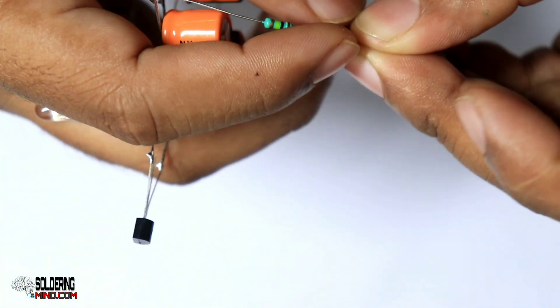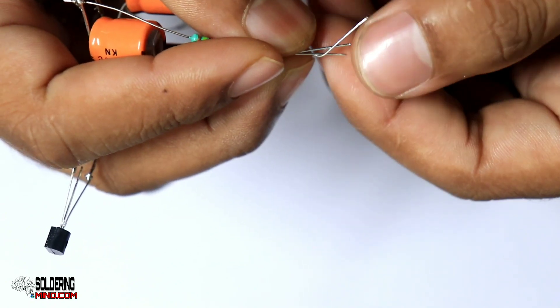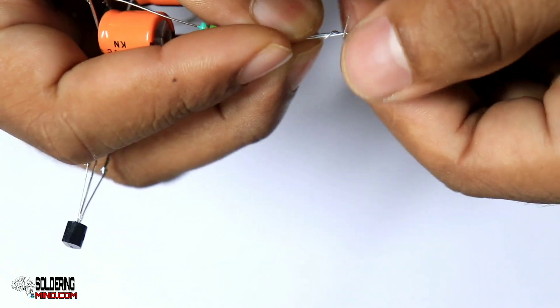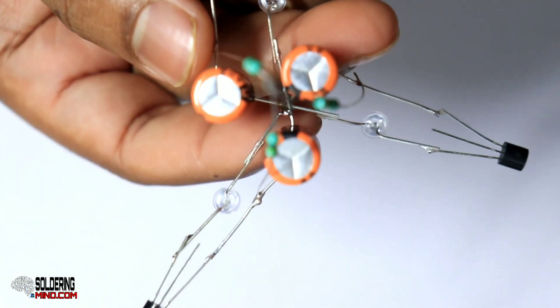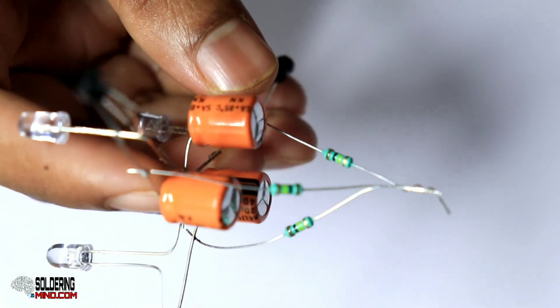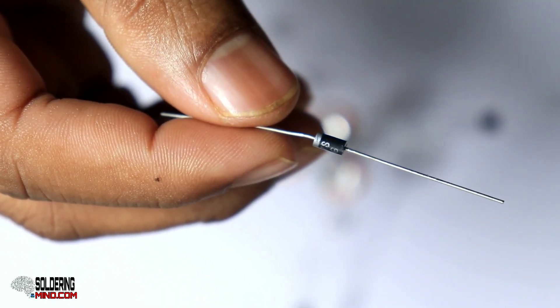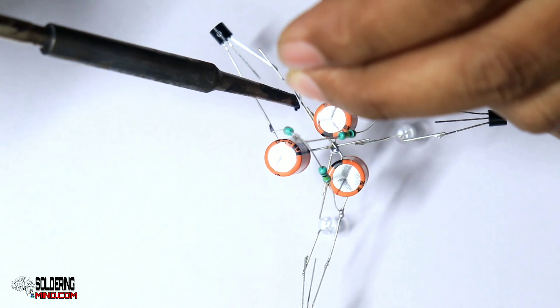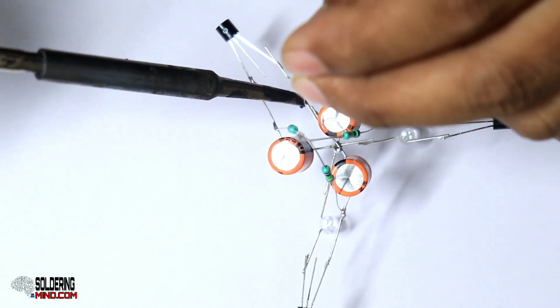Take a 1N4007 diode. Connect the positive side of the diode to the negative supply of the capacitor.